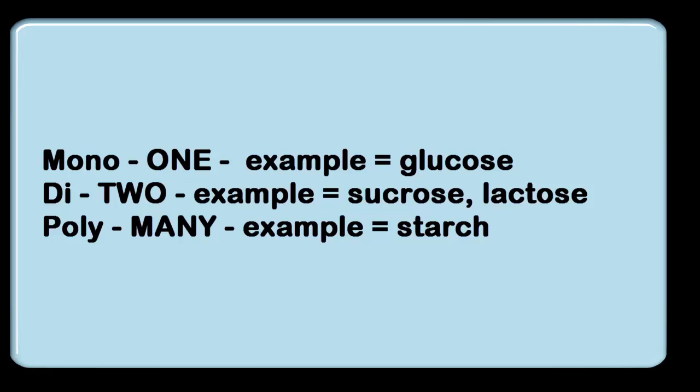A disaccharide is a sugar that has two monosaccharides attached together. These are a little bit more complex sugars but not overly complex. They include things like lactose, which is in dairy products, and sucrose, which is our table sugar. Polysaccharides are carbohydrates that contain three or more monosaccharides together. These are more complex carbohydrates, including things like starch and cellulose.